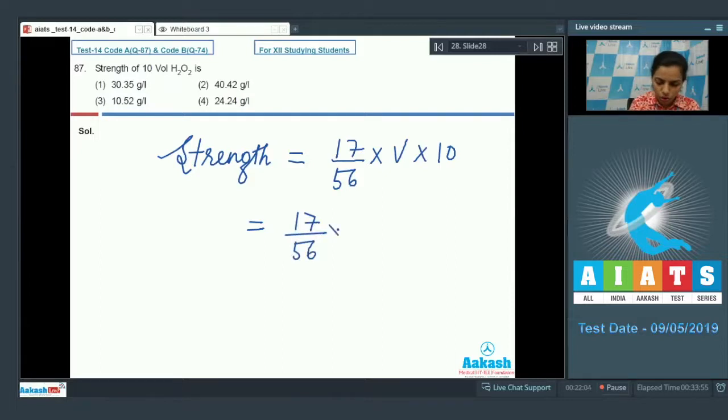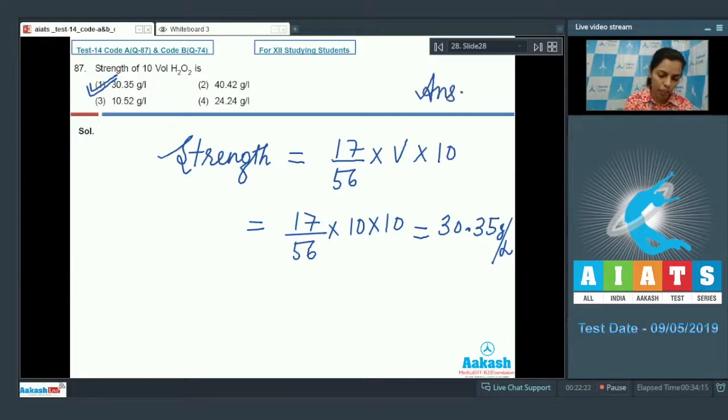...by placing values here, the volume strength is 10 into 10, and this will give you the value that is equal to approximately 30.35 gram per liter. That's given in option one, so just choose option one as your correct answer.